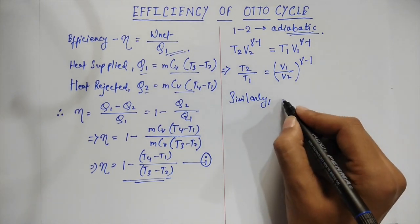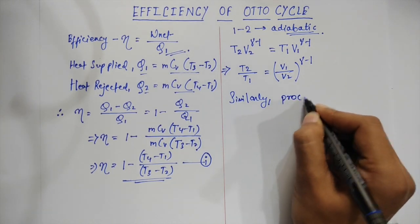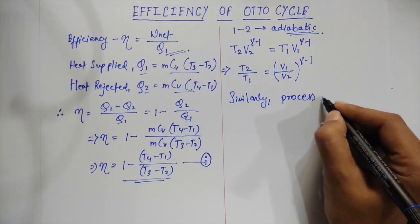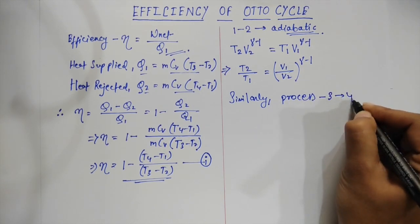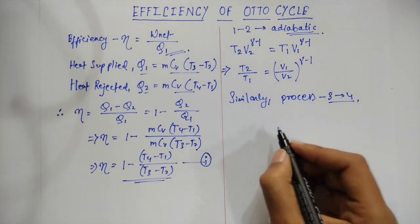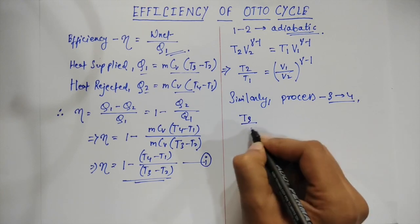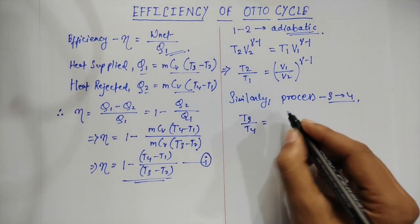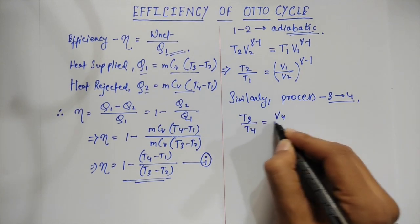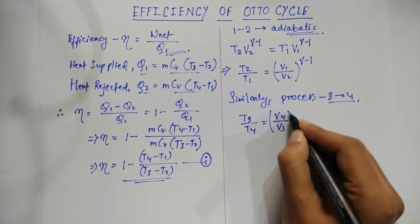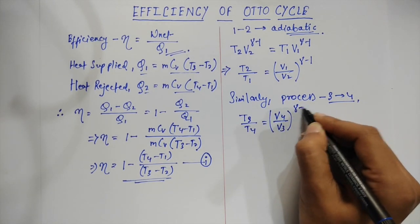From the process 3 to 4, this is also an adiabatic process. We can see the equation T3 by T4 is equal to V4 by V3 whole to the power gamma minus 1.